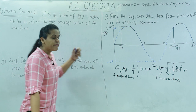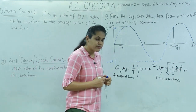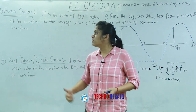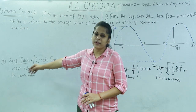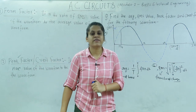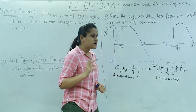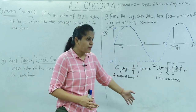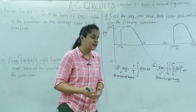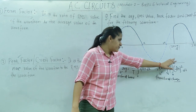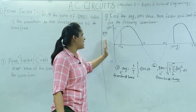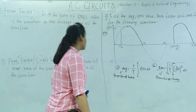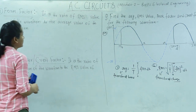Now let us go to our two more important terms which are important for your objective questions. In objective questions, most of the time they ask form factor, peak factor, RMS value, and average value definitions. In subjective questions they can ask you to calculate average value, peak value, RMS value, peak factor, crest factor, and form factor. This question I have written here was asked in your examination for 7 marks — such a tiny question it is.